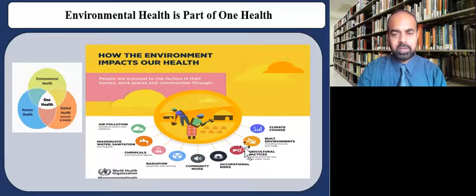Here, this infographic from WHO again lists some of the specific environmental factors that affect human health, such as air pollution, inadequate water and sanitation, the use of chemicals, use of radiation, and the noise level in the community.